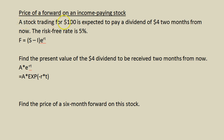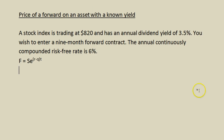Previously we had an asset trading for $100 expected to pay a dividend of a certain dollar amount in the future. The difference here is that the asset has an income expressed as a percentage yield — that's the only difference, and the equation will be different as well. In this example, you wish to enter a nine-month forward contract on this asset, and the annual continuously compounded risk-free interest rate is 6%.